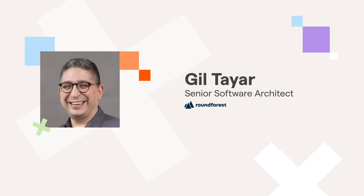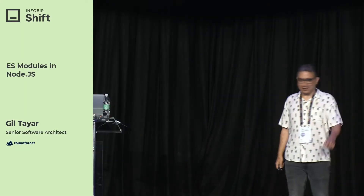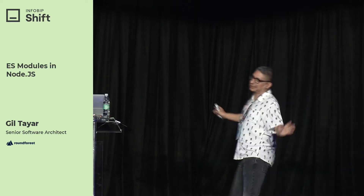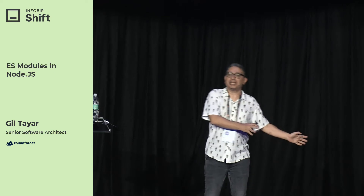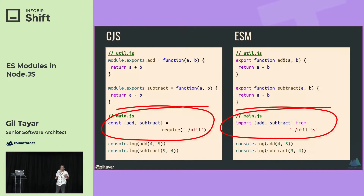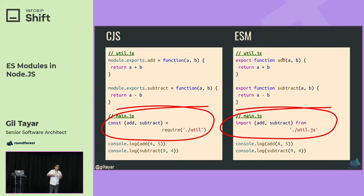Hi everybody, I'm Gil, and ES modules in Node.js — I am pumped up, really pumped up. First of all, what are ES modules? Just so we're on the same page: we have CommonJS, which is what the module system was in Node.js until now — and it's still working. You have your module.exports.add, that's how you export something. In ESM you use the syntax 'export function'. To import in CJS — the old Node system called CommonJS — it's require, and in ESM it's 'import from'.